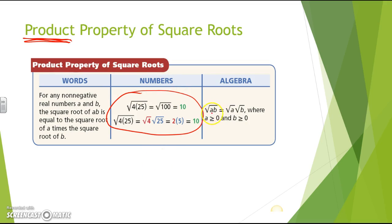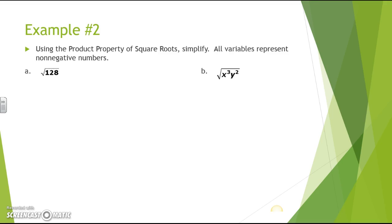The algebra form is: the square root of a times b equals the square root of a times the square root of b, where a is greater than or equal to zero and b is greater than or equal to zero. Note that all variables represent a non-negative number.